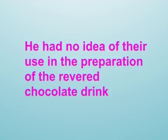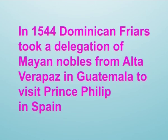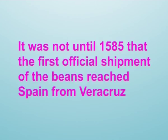On August 15th, 1502, Columbus came across a Mayan trading canoe with cocoa beans on the island of Guanaja, now known as a Bay Island 30 miles north of mainland Honduras. Columbus noted the cocoa beans resembled almonds and that the Mayan people treated them as precious, but had no idea of their use in preparing the revered chocolate drink. The first written account suggests that in 1544, Dominican friars took a delegation of Mayan nobles from Alta Verapaz in Guatemala to visit Prince Philip in Spain, bringing beaten chocolate as a gift.